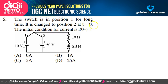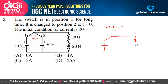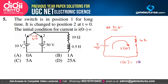The switch is in position 1 for a long time, then changed to position 2 at t = 0. At t = 0⁻, the inductor is fully charged and acts as a short circuit. The circuit has a 10 V source and 10 Ω resistor, so I(0⁻) = 10/10 = 1 ampere. Option B is correct.